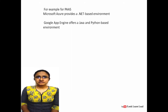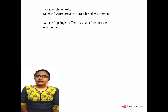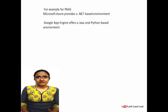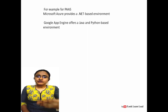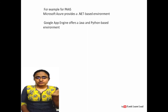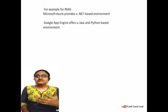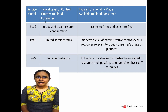As an example of Platform as a Service, Microsoft Azure provides .NET-based environments. For Java and Python environments, Google App Engine provides the platform. So if you are working on one operating system and need a different environment, instead of installing a new operating system you can just use the Platform as a Service from the cloud provider.